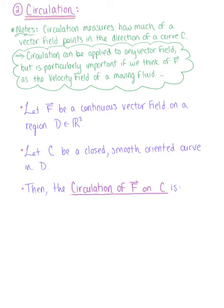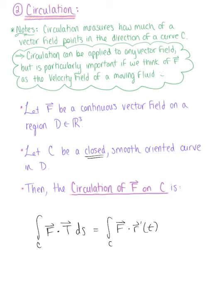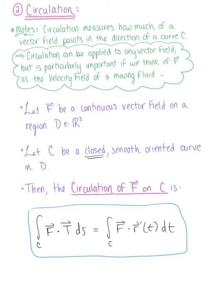Here's our definition. We let vector F be a continuous vector field on some region D in R3. We let C be a closed, smooth oriented curve in D — closed meaning it has the same start and end point. Then the circulation of the vector field on C is defined by the vector line integral: the integral over C of the dot product of the vector field and the tangent vector with respect to the arc length, which is the integral over C of the vector field dotted with the tangent vector with respect to T dt. This is the vector line integral for the circulation of the vector field on a closed smooth oriented curve C.